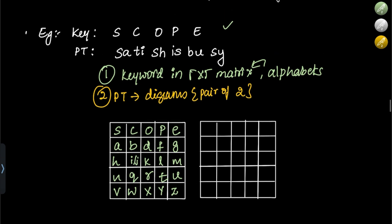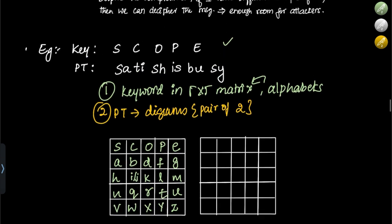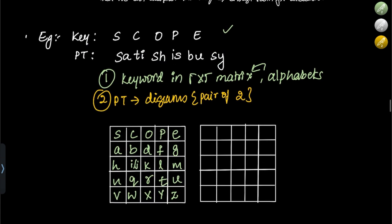The plain text given is 'Satish is busy'. Writing it in pairs: SA, TI, SH, IS, BU, SY.